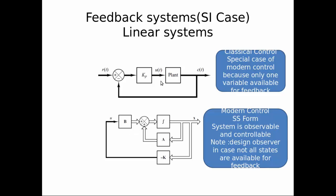A quick comparison: in classical control we have only one variable for feedback, and we find the gain through traditional techniques such as root locus or frequency domain methods like Nyquist, Nicholas chart, and Bode plot. We are interested in only one variable for feedback.